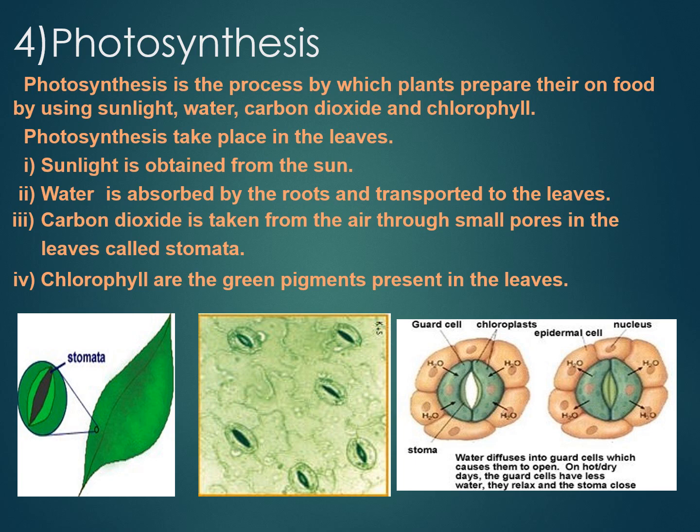Third is chlorophyll. Without chlorophyll, photosynthesis cannot take place. It is a green pigment present in the leaves of plants that captures the energy of sunlight. It is present in a special structure called the chloroplast. Each leaf contains hundreds of these chloroplasts.